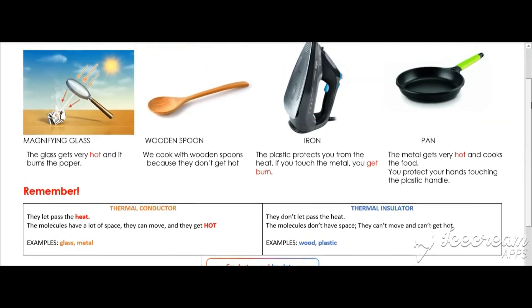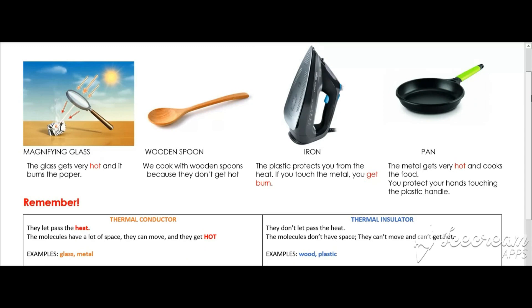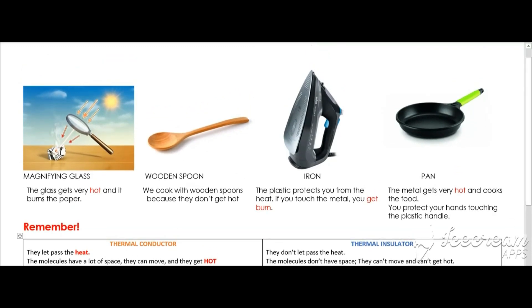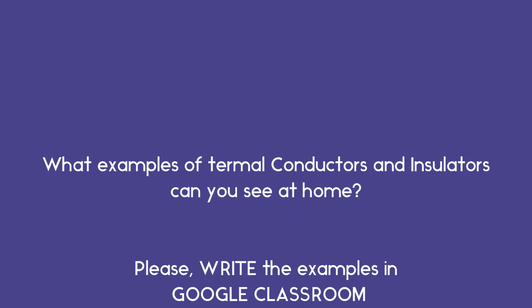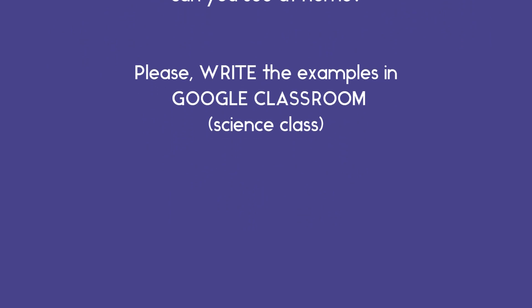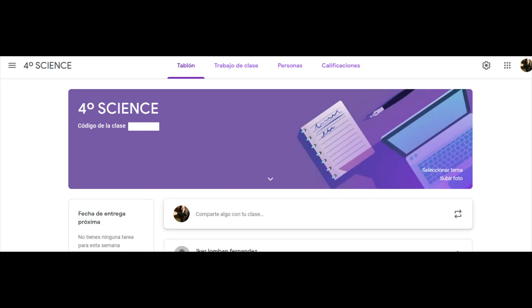I have a question for you. Can you think of more examples of thermal conductor materials and thermal insulator materials? Can you look for information, or can you look at home? How many materials do you have that are thermal conductors or thermal insulators? You should look and find some examples at home. If you have some examples, you can tell me. Please write an example in the Google Classroom, in English.